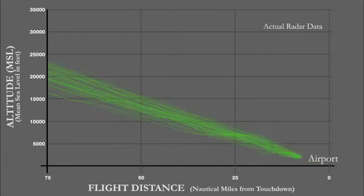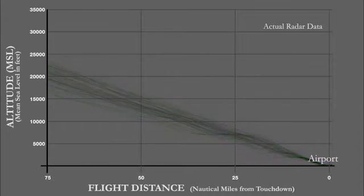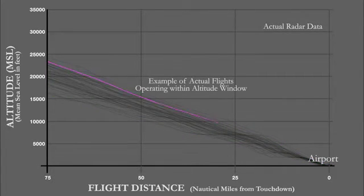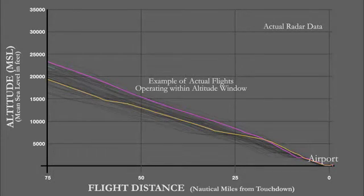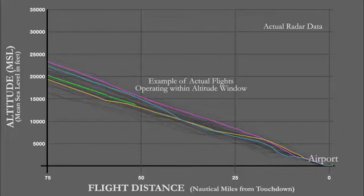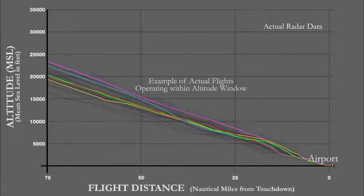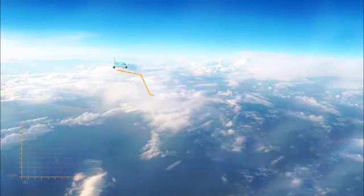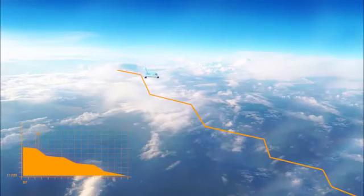By contrast, an optimized profile descent, or OPD, has built-in speed and altitude requirements at various points on the route. This information is programmed into an airplane's flight computer and allows them to essentially glide down to an airport on idle power, and controllers don't have to issue instructions after clearing the plane to begin its descent. An OPD and optimized climb profile are much more efficient than traditional descents and climbs, and there are key benefits that we're seeing in our use of satellite-based routes.